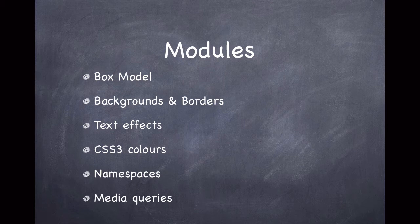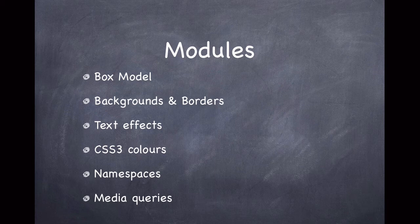CSS2 and CSS1 had all their features in one big box, and updating all those features inside that CSS2 box was a daunting process. So what they decided to do was cut the box up into small chunks called modules and group features together into each module — things like the box model, backgrounds and borders, text effects, CSS3 colors, namespaces, media queries, and so on. They add new modules and keep updating CSS3 so that you get new features every now and then, updating small chunks at a time rather than everything at once.